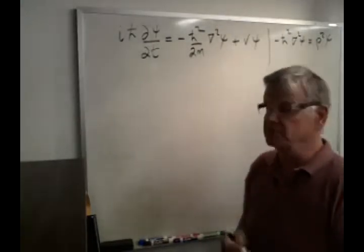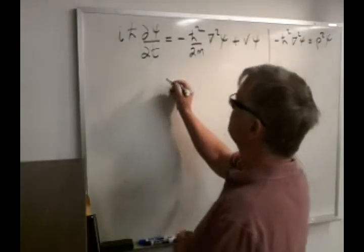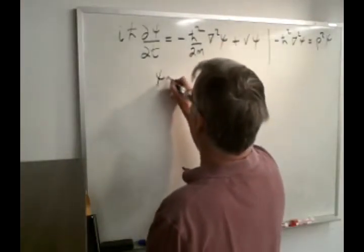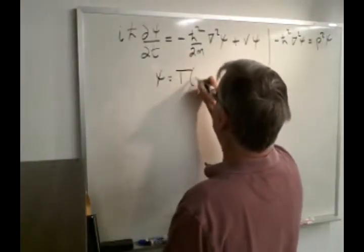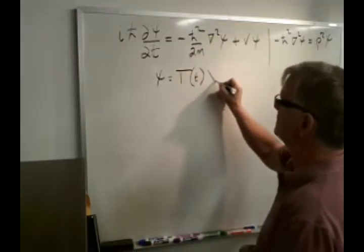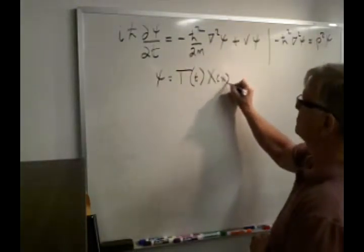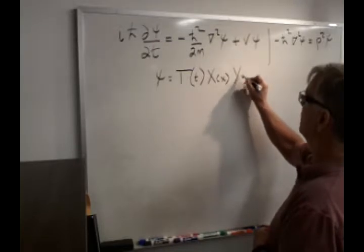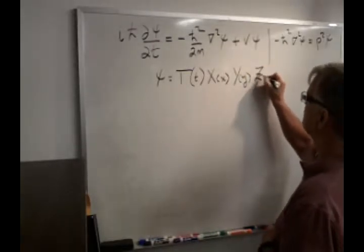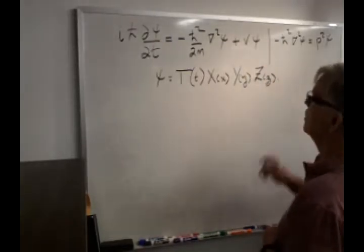In order to have separation of variables, we will take this. Very simply, we say that ψ is equal to some function T, which is in time only, times some function X, which is in x only, times some function Y, which is in y only, times some function Z, which is in z only.